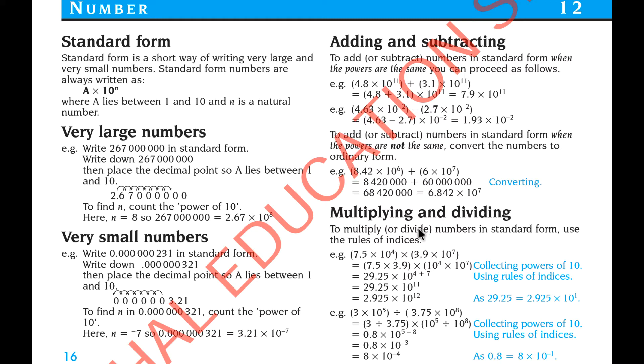Multiply and dividing. This is much easier. Multiply the numerals. Numerals will multiply. The powers, powers will multiply. To multiply or divide numbers in standard form, use the rules in indices. So 7.5 multiplied 10 to the power 4, multiply 3.9 multiplied 10 to the power 7. First you multiply 7.5 by 3.9. Then multiply 10 to the power 4 by 10 to the power 7. So here it's giving you 29.25. Here 4 plus 7 is 10 to the power 11.